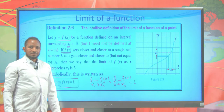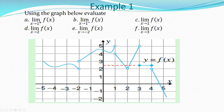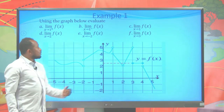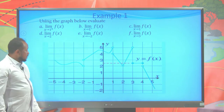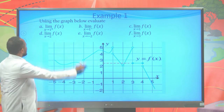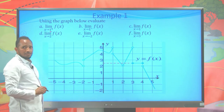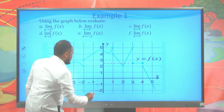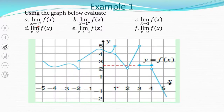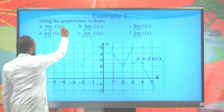Now let's try an example. This function is given. From this graph, you are expected to find the limit of f(x) when x approaches different values. Let's start from part A: find the limit of f(x) when x approaches 1 from the right side. The right side of 1 is this part. From the right side, the functional value is approaching 4. Therefore, the limit of f(x) when x approaches 1 from the right is 4.